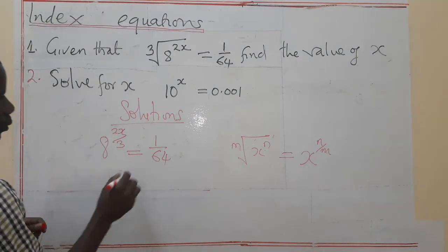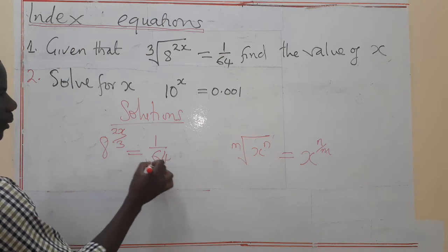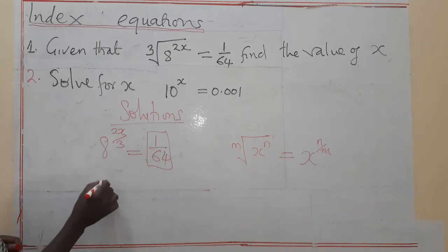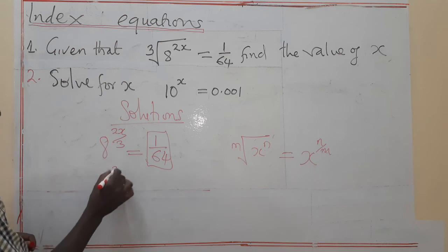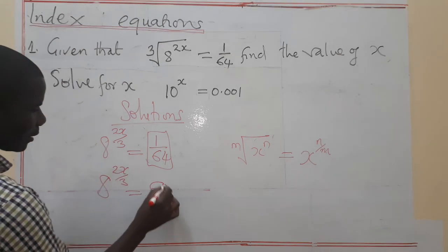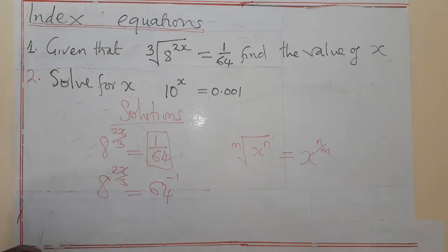So you should be able to know that this part alone here. We are going to rewrite it as, here we have 8^(2X/3), then this is going to be 64^(-1). So this expression is the same.